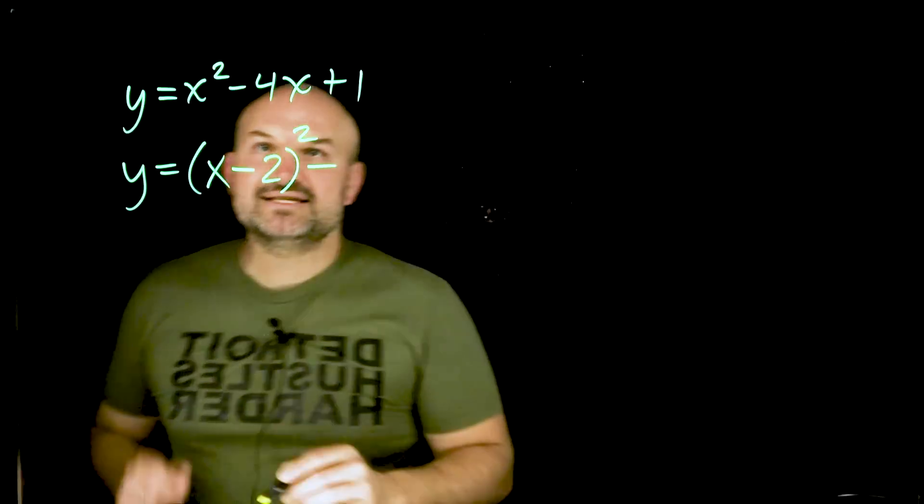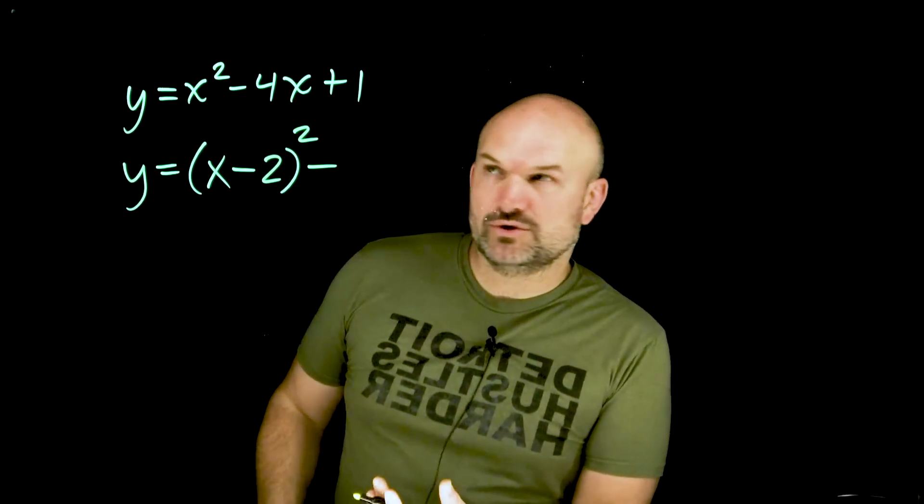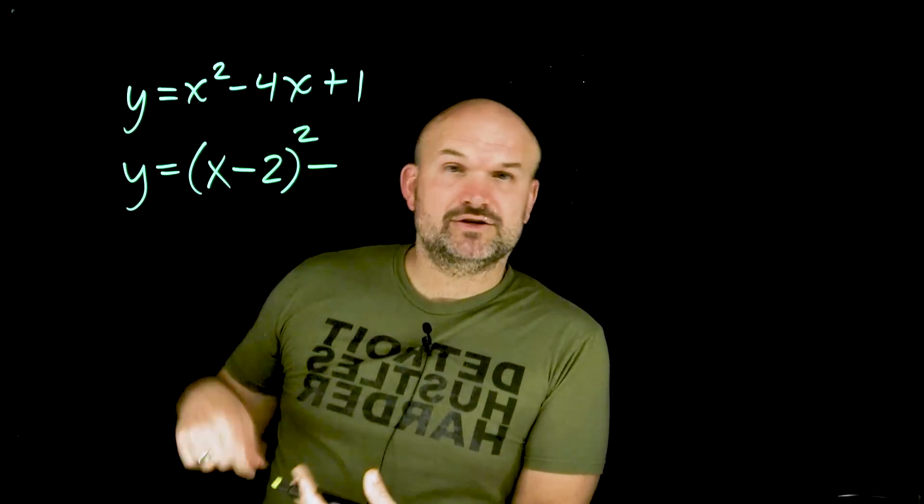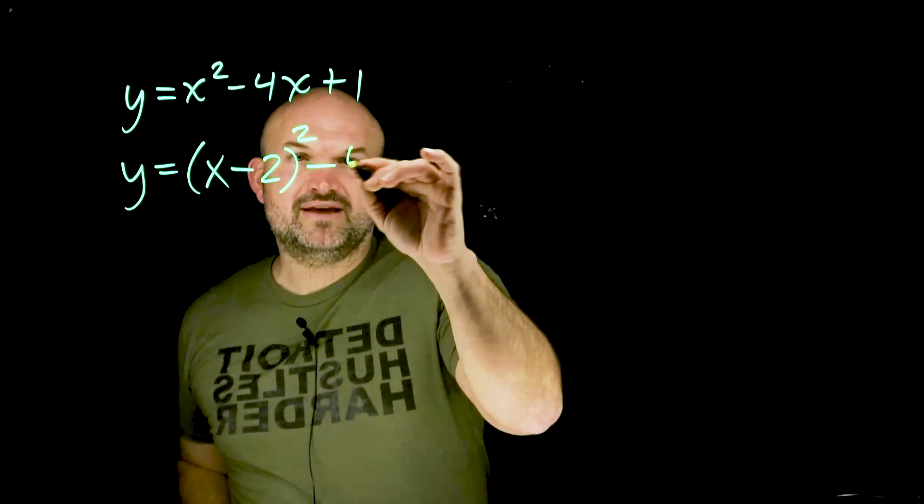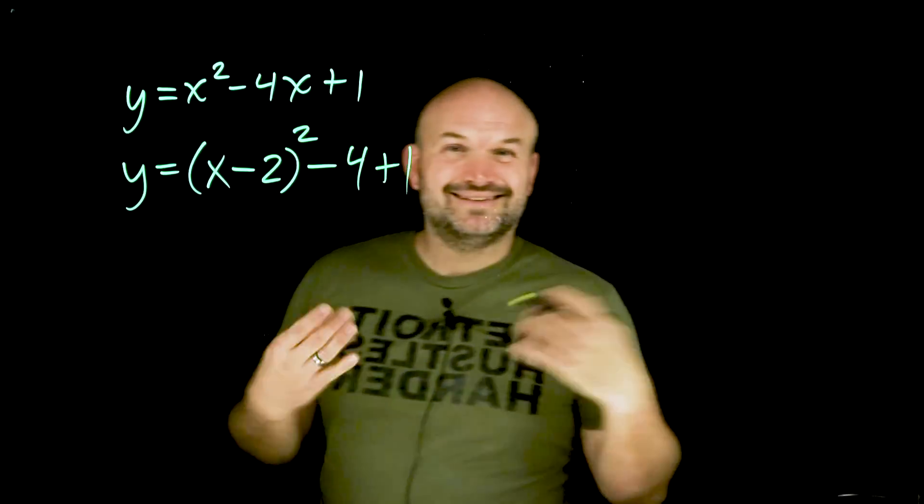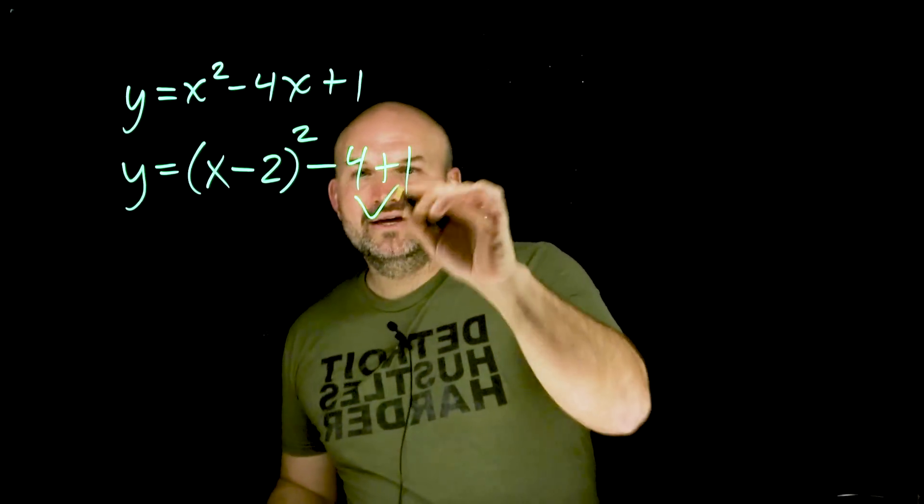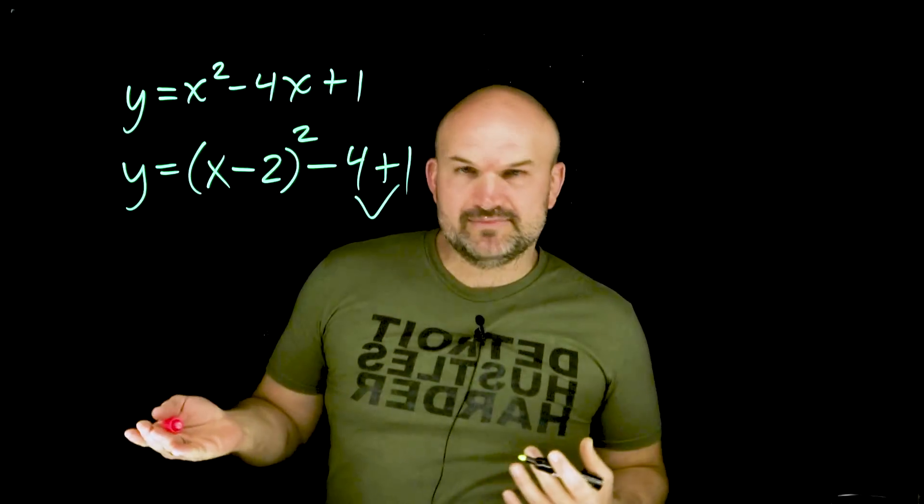Then, we're always going to subtract our b divided by two squared. So, four divided by two is two, two squared is going to be a four, and then you can add a one. Now, the last thing we need to do is just go ahead and combine those terms, which is going to be a negative three.